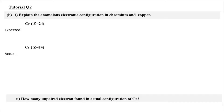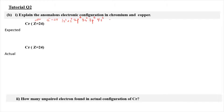Now we're moving on to tutorial question 2b1, where we need to explain the anomalous electronic configuration in chromium and copper. For chromium, there are 24 electrons — the proton number equals the electron count since it is neutral. The predicted SPDF notation is 1s2, 2s2, 2p6, 3s2, 3p6, 4s2, and then 3d4.